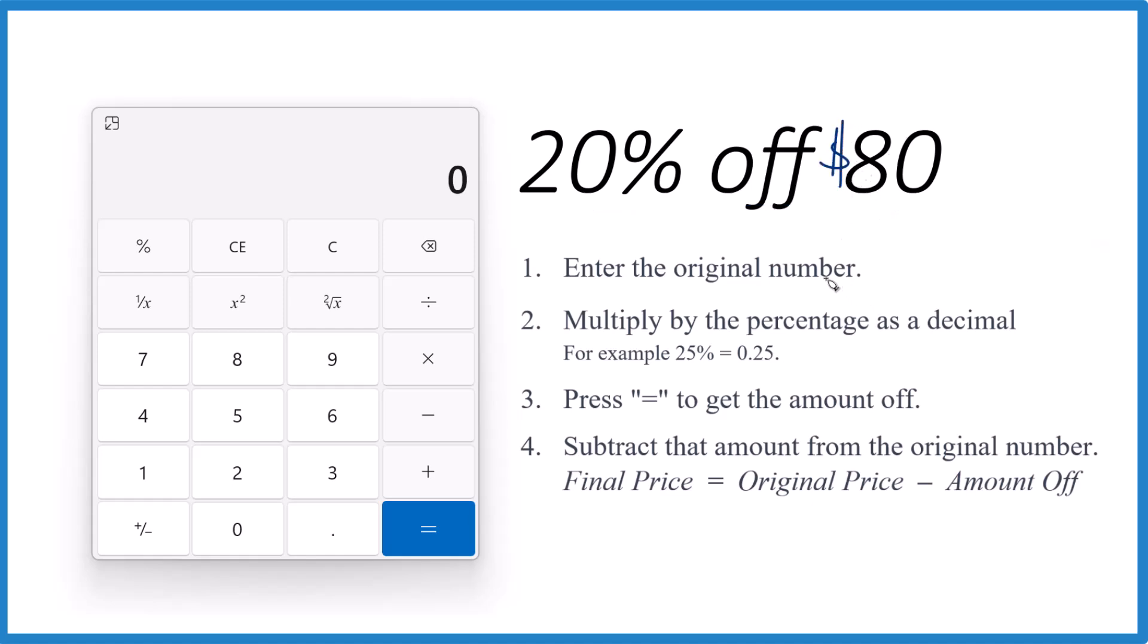So first thing, take the original number, that's the 80 here, and we're going to multiply that by the percentage as a decimal. So 20%, that becomes .20, or we can just call it .2.